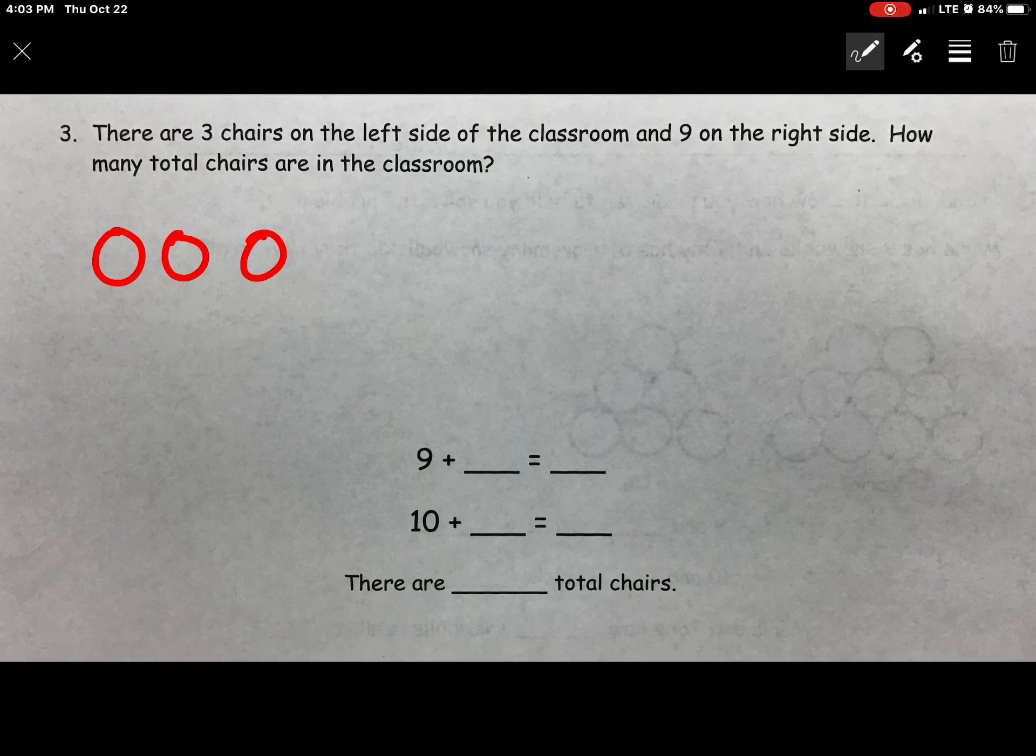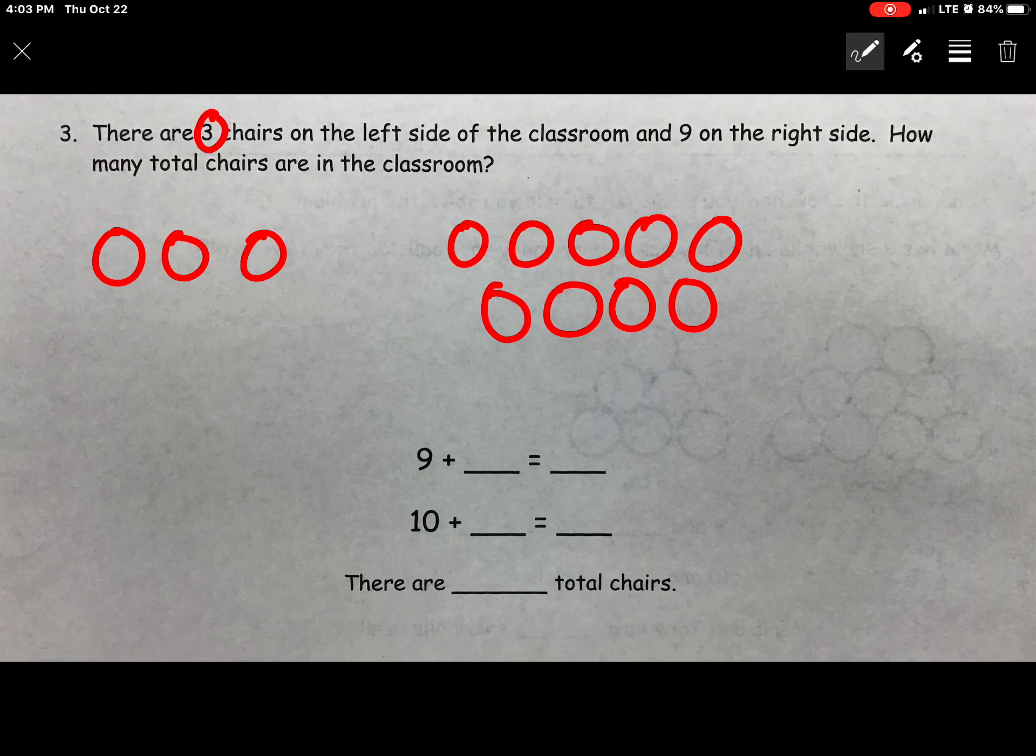And 9 on the right side. 1, 2, 3, 4, 5, 6, 7, 8, 9. Now I've got my two math facts, 3 and 9. And I know that 9 is closest to 10. And 9's buddy to make a 10 is 1.